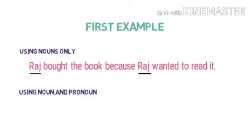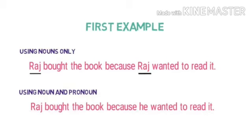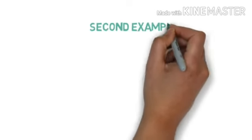Second example. Raj bought the book because he wanted to read it. Here we used he instead of repeating Raj. It made our sentence simple.